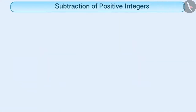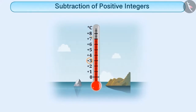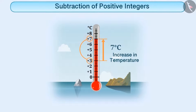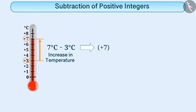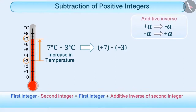First, we will understand how to do subtraction of positive integers. Suppose the temperature of a place is 3 degrees centigrade. If it increases to 7 degrees centigrade, then what is the rise in temperature? In order to find out, we need to subtract 3 degrees centigrade from 7 degrees centigrade. That means, we need to subtract plus 3 from plus 7. Whenever we have to subtract an integer from another integer, we will add the additive inverse of the integer that is being subtracted to the first integer. The additive inverse of any number can be obtained by changing its sign. So the additive inverse of plus 3 is minus 3.